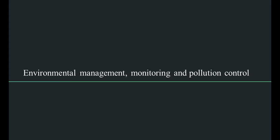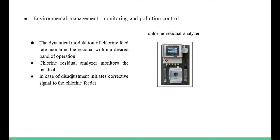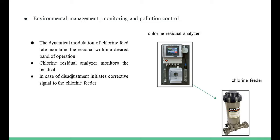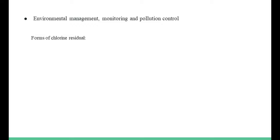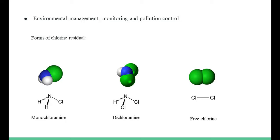Chlorine residual control. This method of operation relies on the dynamical modulation of chlorine feed rate to maintain the residual within a desired band of operation. For this matter, a chlorine residual analyzer is used to monitor the residual, and in case of this adjustment, it initiates a corrective signal to the chlorine feeder. Chlorine residual occurs in wastewater in several forms: monochloramine, dichloramine, and free chlorine. Due to the amount of ammonia in wastewater, the residual generally takes the form of monochloramine or dichloramine.